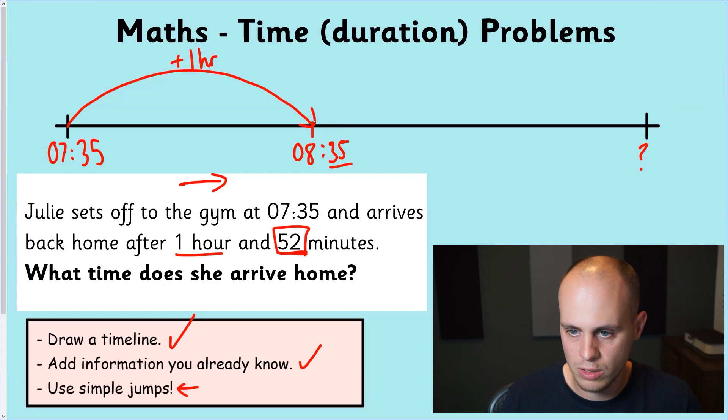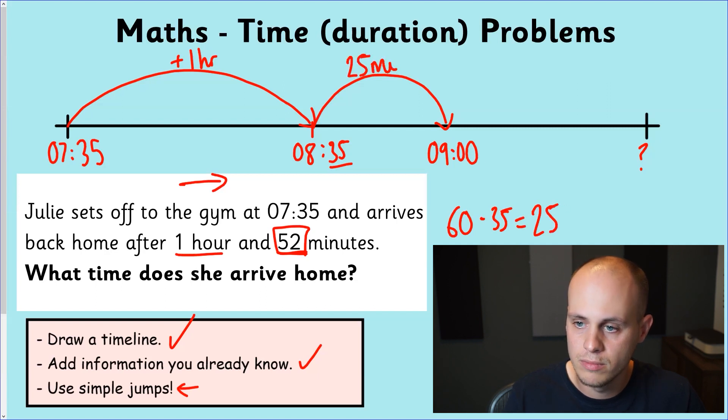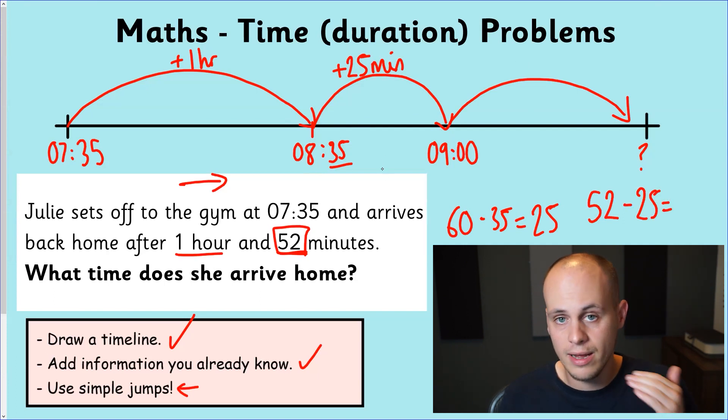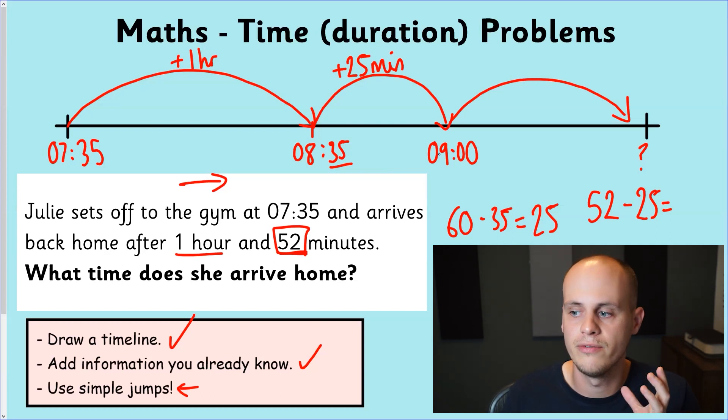This is what I mean by hour checkpoints. When you know it's going to go over the next hour, just jump to it. Just jump to that next hour first, make nice simple jumps. We want to jump to nine o'clock, work out how much that was. 60 take away 35 means we had a 25 minute jump. Then just reassess the situation. How many of these 52 minutes have we just jumped? We've jumped 25 minutes. So how many are left? It needs to be that 25 plus this next jump makes 52. So with another simple subtraction, we're working out the difference between 52 and 25. I know the difference between 50 and 25 is 25. 52 is two more. That leaves us with a 27 minute jump.